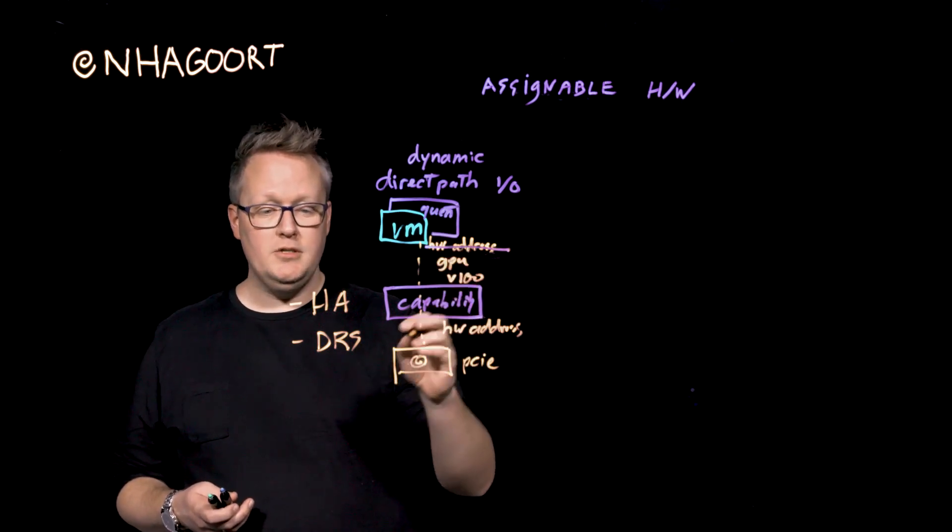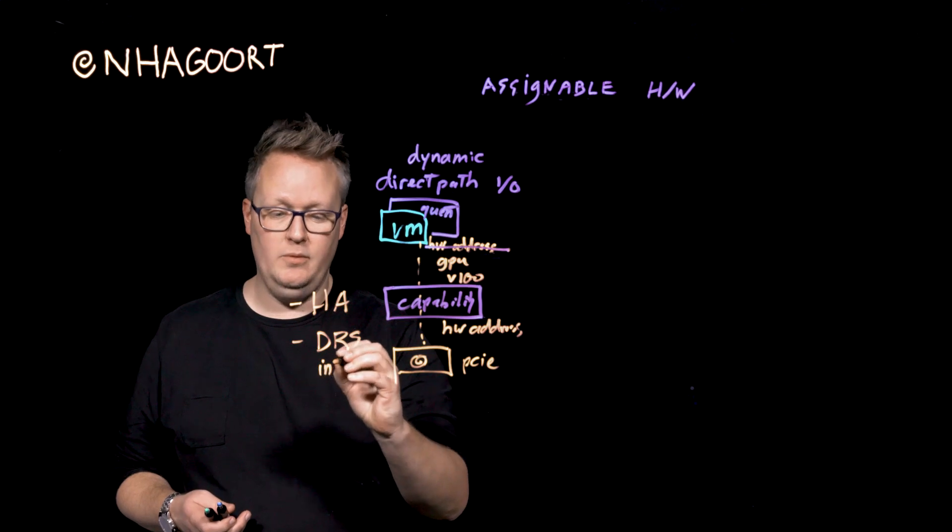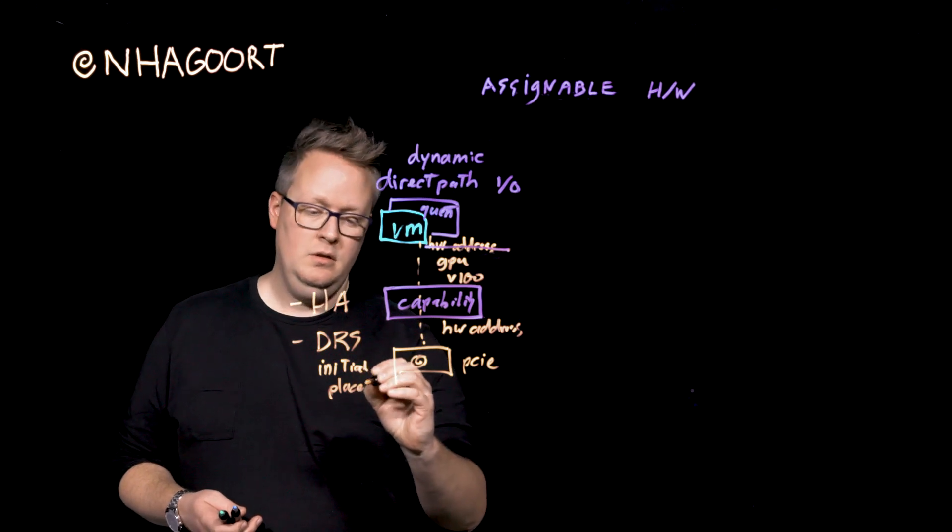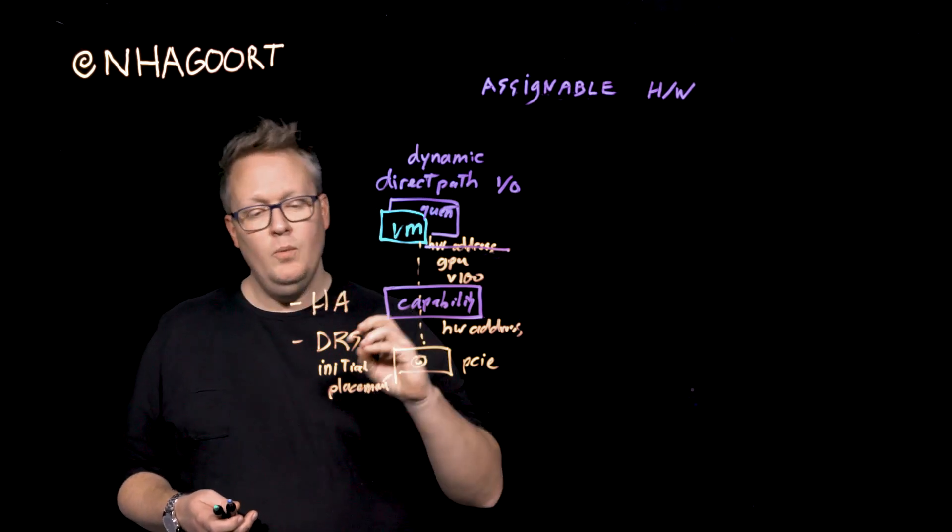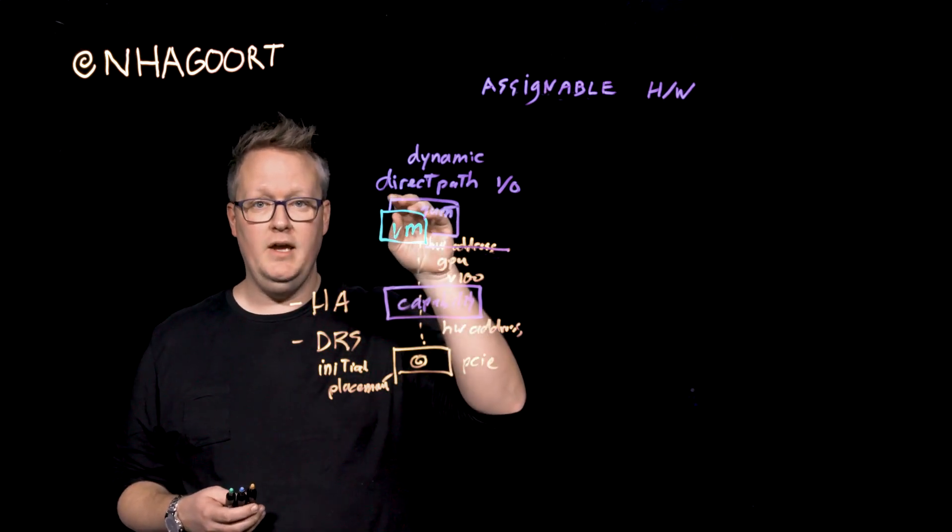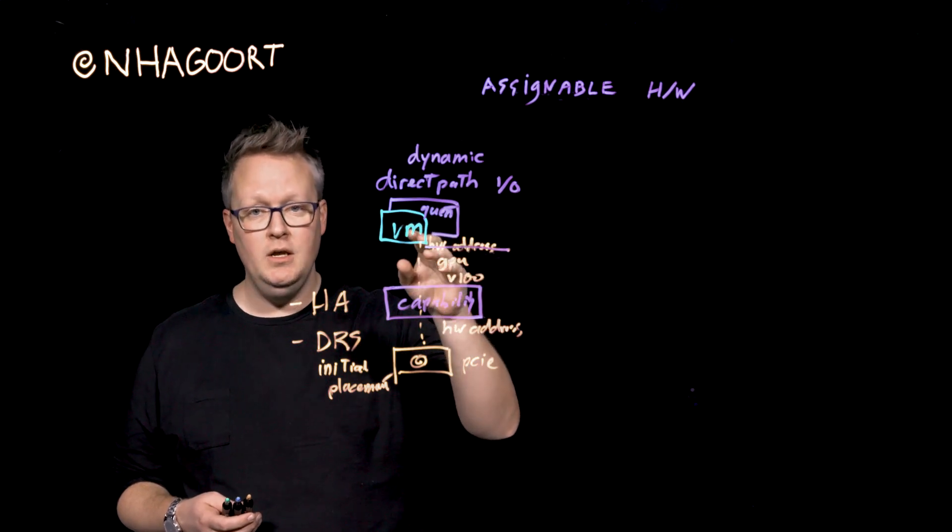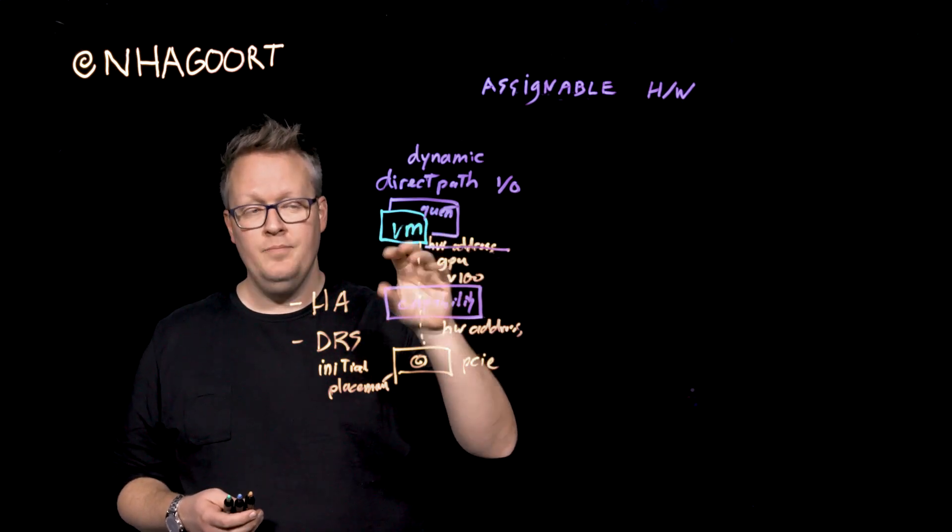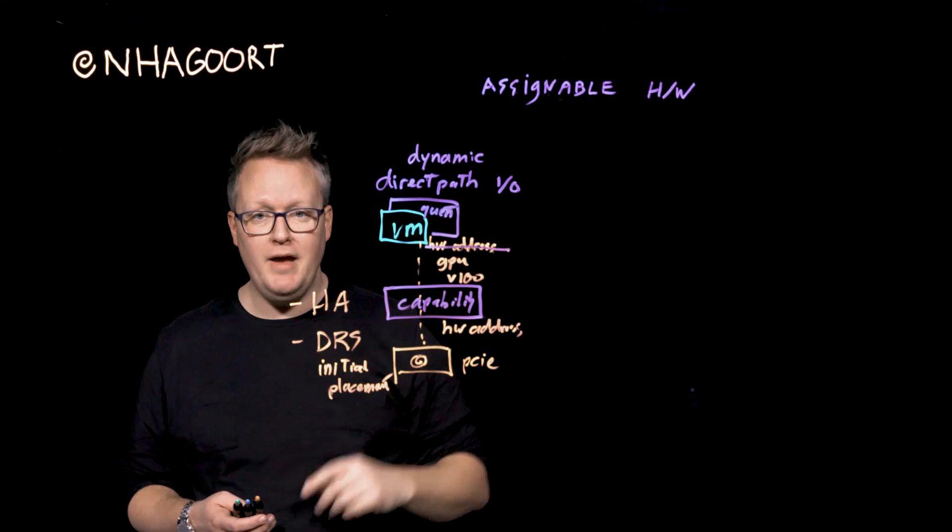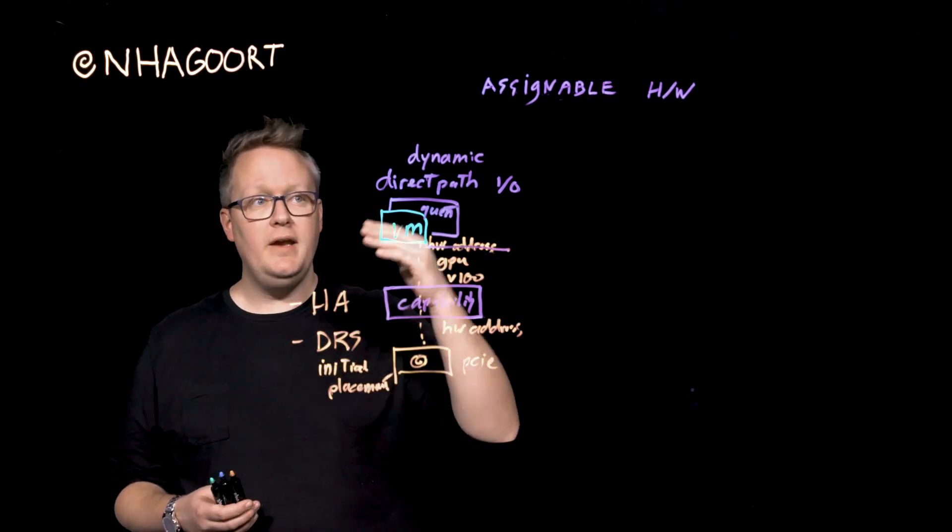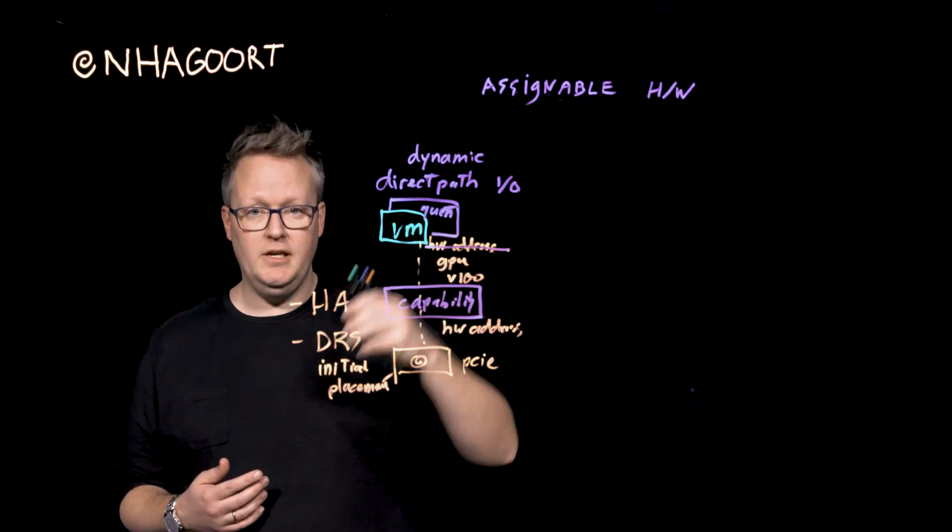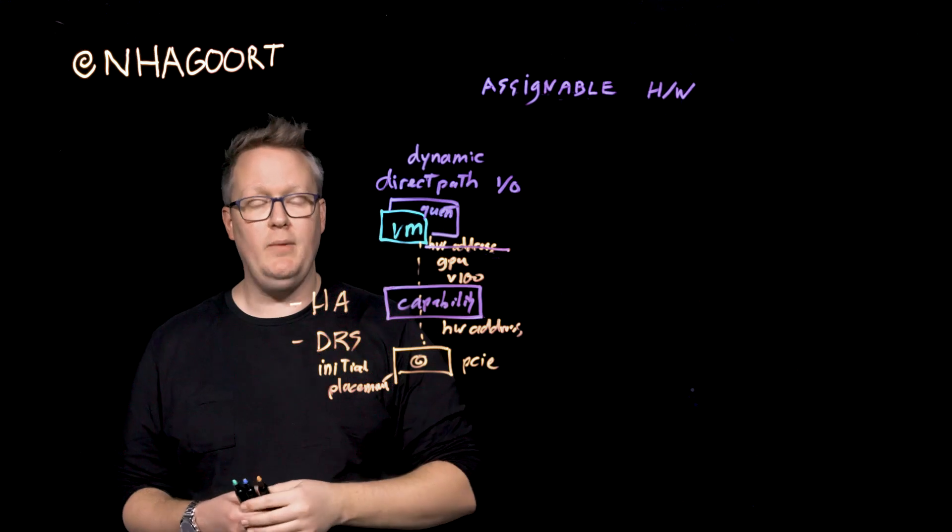Now, in the process, because we now have initial placement with DRS, we also benefit from vSphere HA. So before, whenever a host with a direct path IO set up virtual machine, whenever that host was failing, the virtual machine basically could not be restored or re-registered and restarted at a surviving ESXi host. Now, with dynamic direct path IO, we bring back that capability for PCIe devices that are directly connected to a virtual machine.